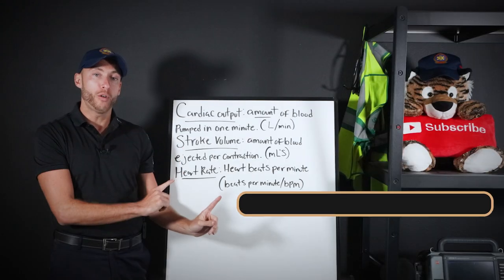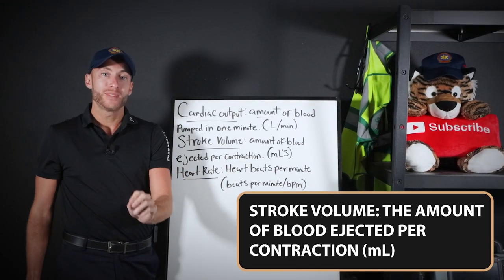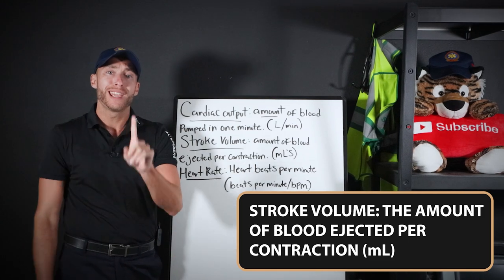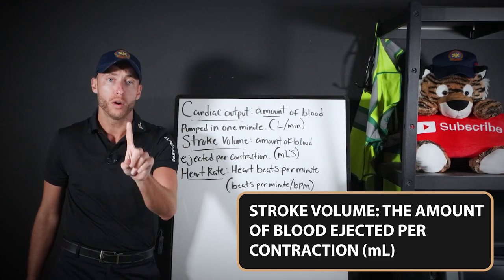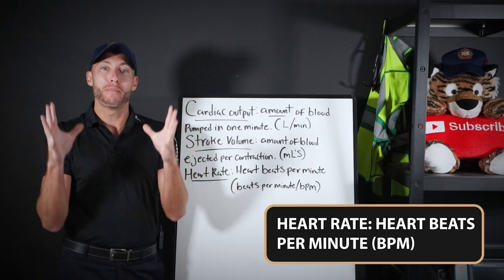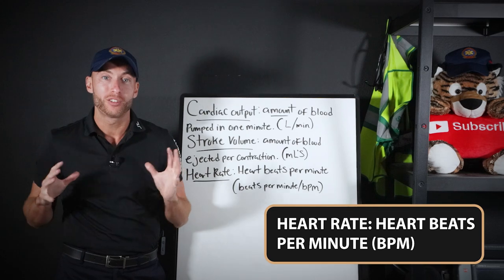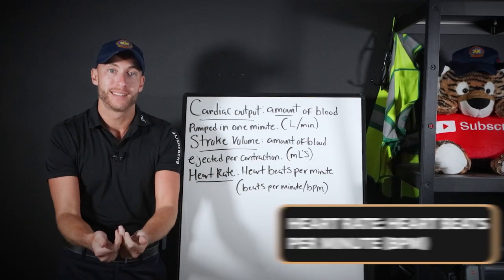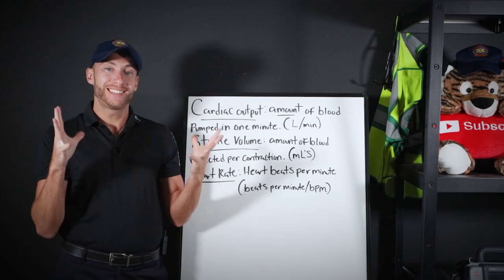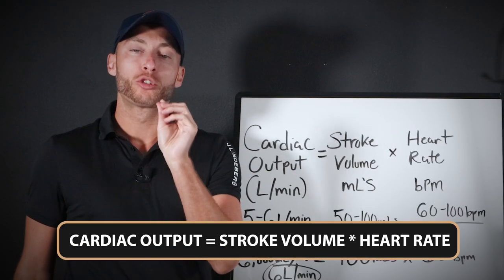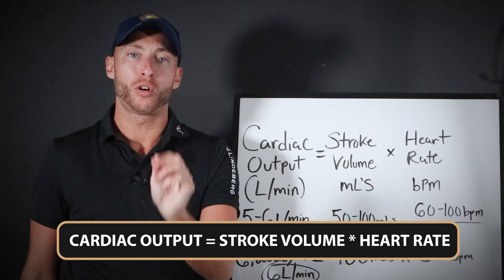Stroke volume is the amount of blood ejected, pushed forward in one contraction — one beat. Heart rate is the number of full contractions or beats in one minute. Here's the equation to determine how efficient our cardiac output is: cardiac output equals stroke volume times heart rate.